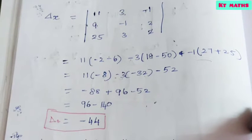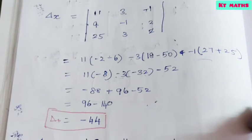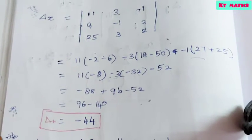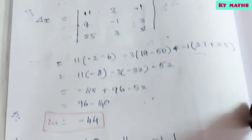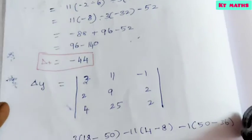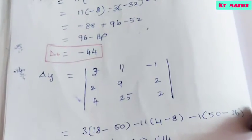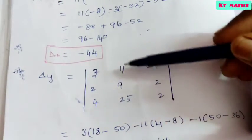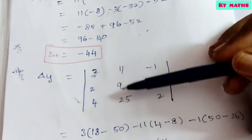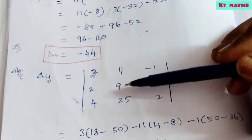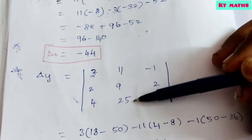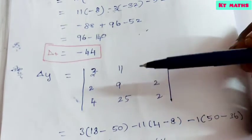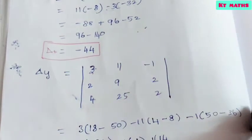Similarly, we find Δy and Δz. For Δy, we replace the y-coefficients with the constants. Substitute 11, 9, 25 into the second column and expand.